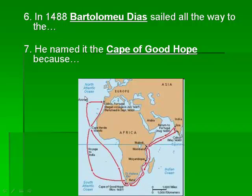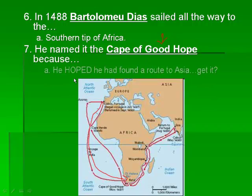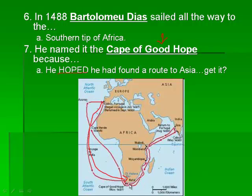The first person we're going to talk about is Bartolomeu Dias in 1488. He sails all the way to the southern tip of Africa, following a path down from Portugal, and he calls this the Cape of Good Hope because he has good hope that he has found a route to Asia. He gets down there and it's water, and more water, and more water. He wants to keep going, but his crew doesn't want to continue, so they turn around and go back to Portugal.